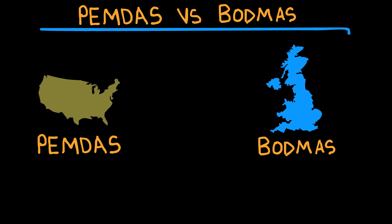In the U.K. and many Commonwealth countries, it's BODMAS: brackets, orders, division and multiplication left to right, addition and subtraction left to right.